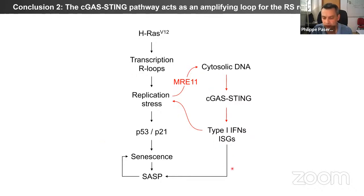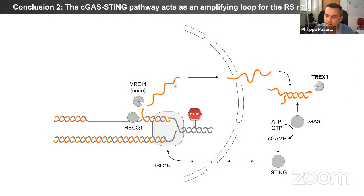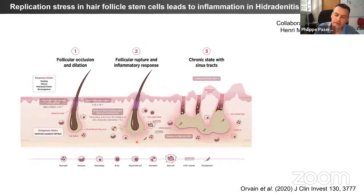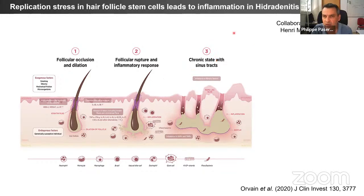I will end with one final example. Some years ago we collaborated with the lab of Sophie Vriz at a hospital in Paris on a strange skin disease called hidradenitis suppurativa — a severe inflammation of the hair follicle for which there is essentially no treatment, and the only option is skin replacement. Patients develop very painful lesions on their skin.